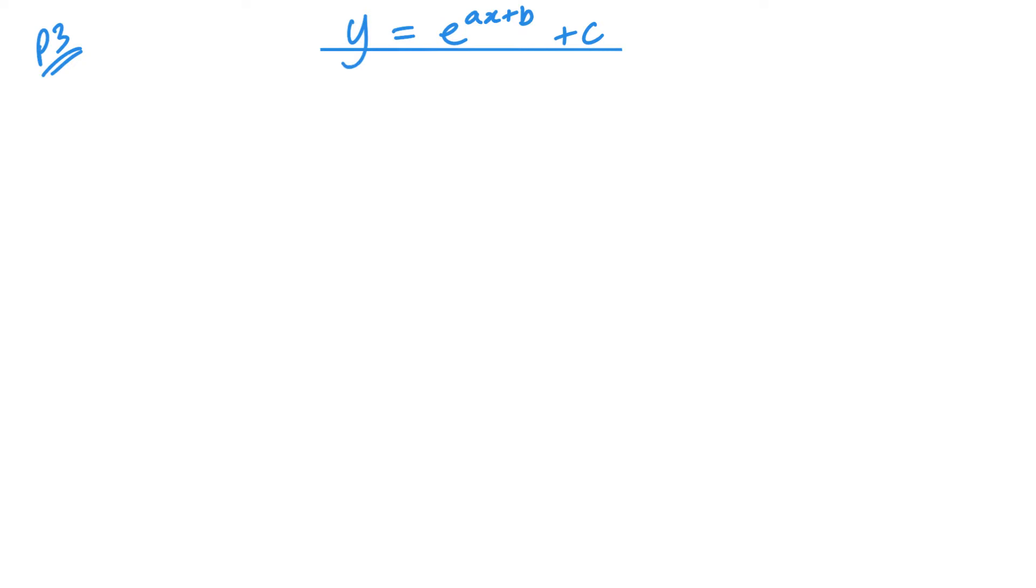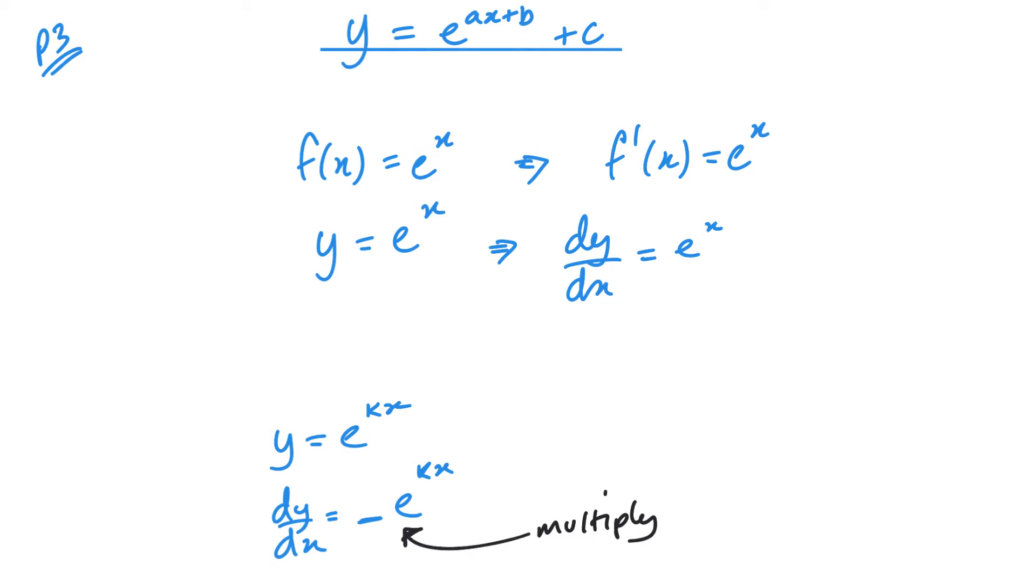Now I said that when you differentiate f of x equals e of x you get the same value. But what happens if it's not an individual x? What if it's e to the 3x, e to the 5x, e to the 2x plus 3 or something like that? So if y equals e to the power some constant times x, when I differentiate, this part is always going to stay the same, e to the power of some constant times x. And then in front of it, what I need to do is differentiate this kx and then multiply it by that value.